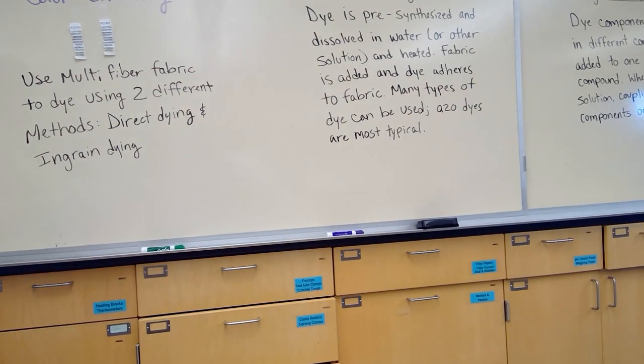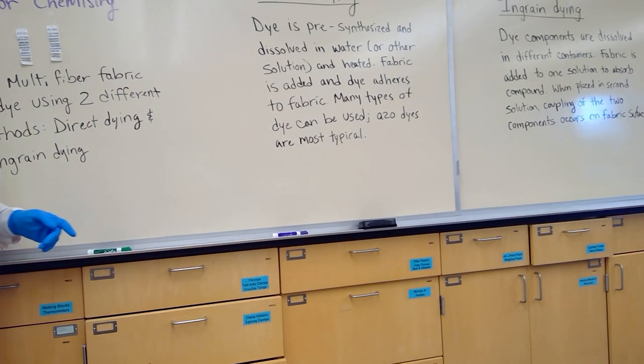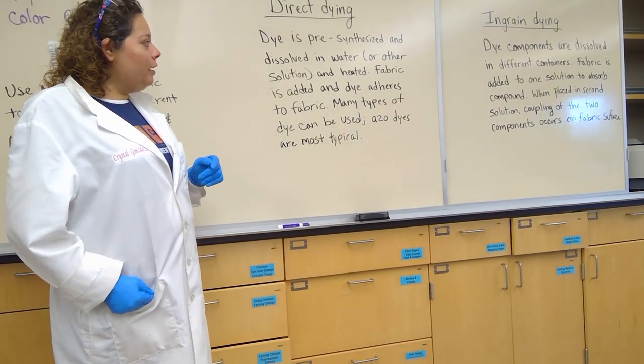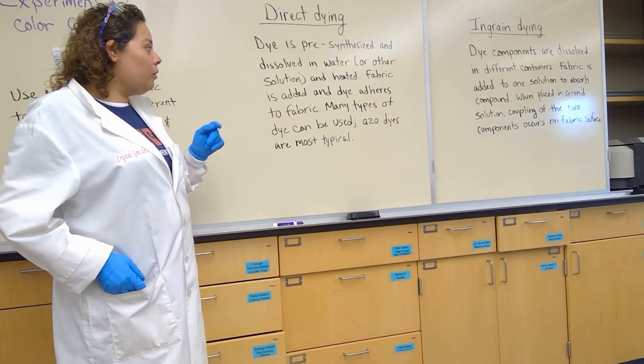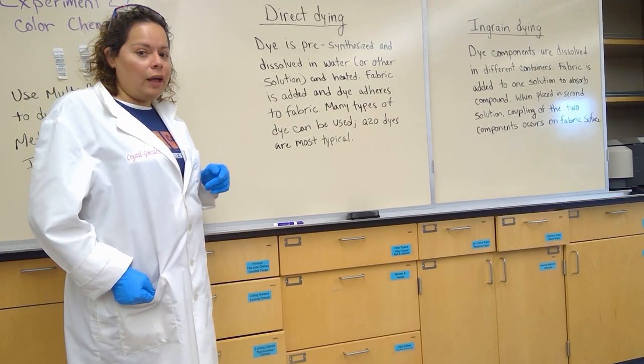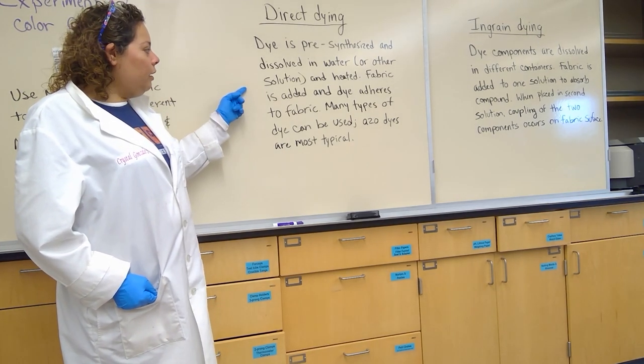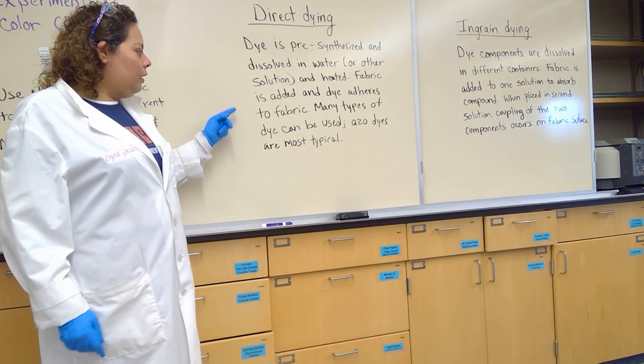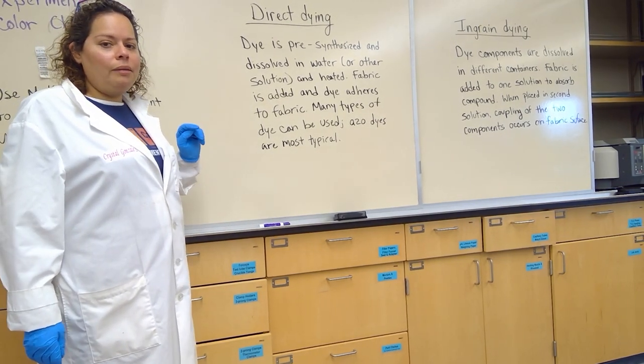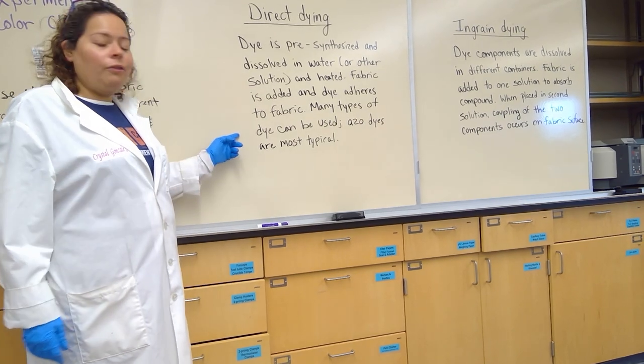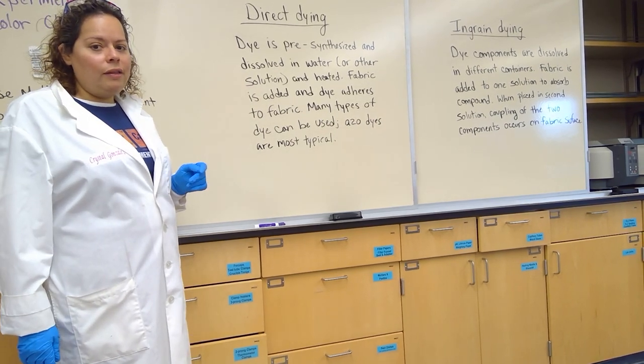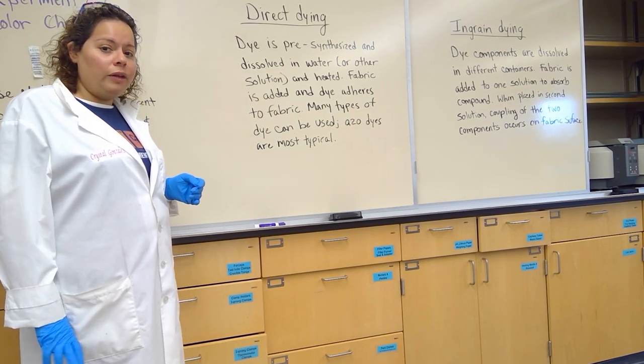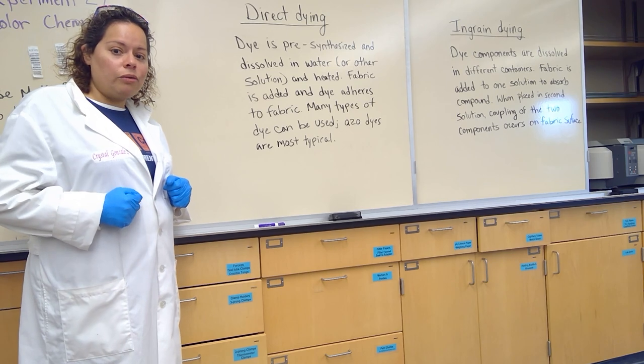Let's take a look at what is direct dyeing. Direct dyeing is pre-synthesized dyes dissolved in water or any other solution that will dissolve the compound, and it is heated. Your fabric is added to the solution once the dye has dissolved, and as it's boiling, the dye will adhere to the fabric. There are many different types of dye that can be used in this fashion. The majority of them happen to be azo dyes, which are nitrogen-based molecules that have benzyl links and various groups.